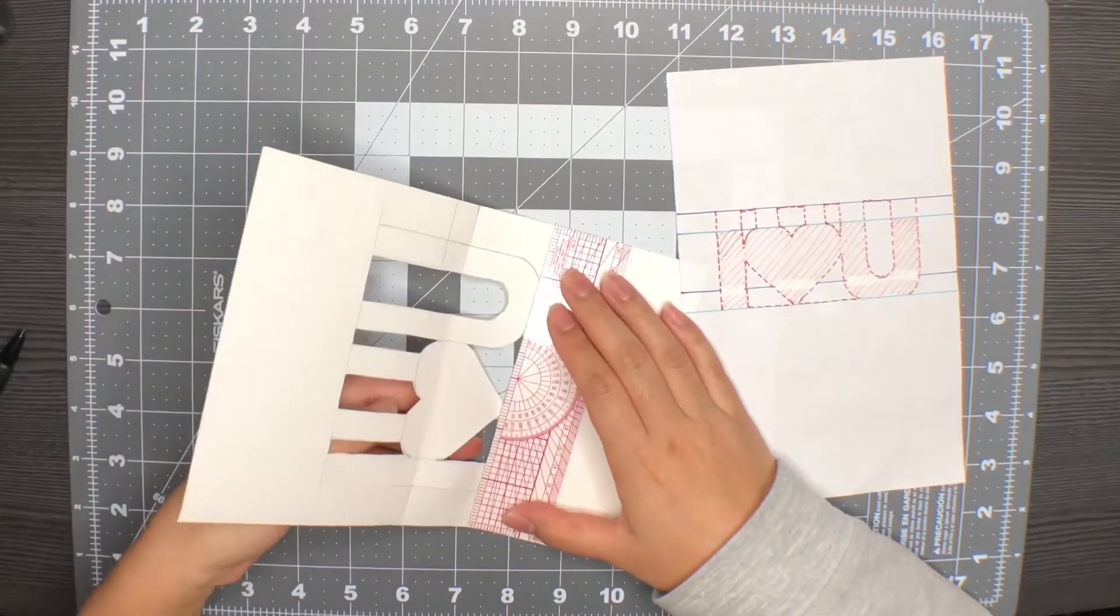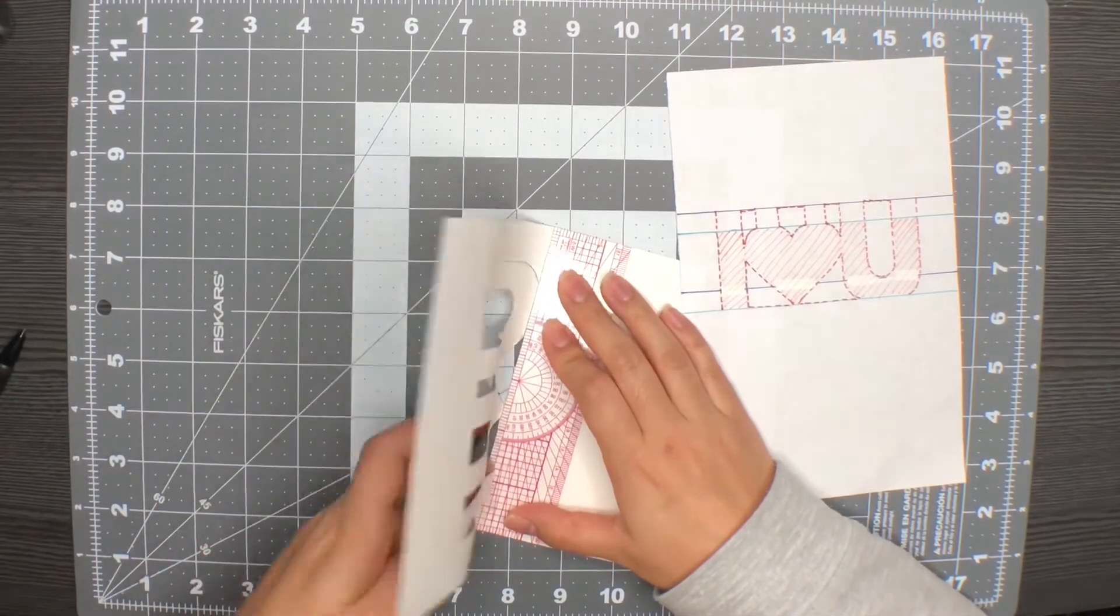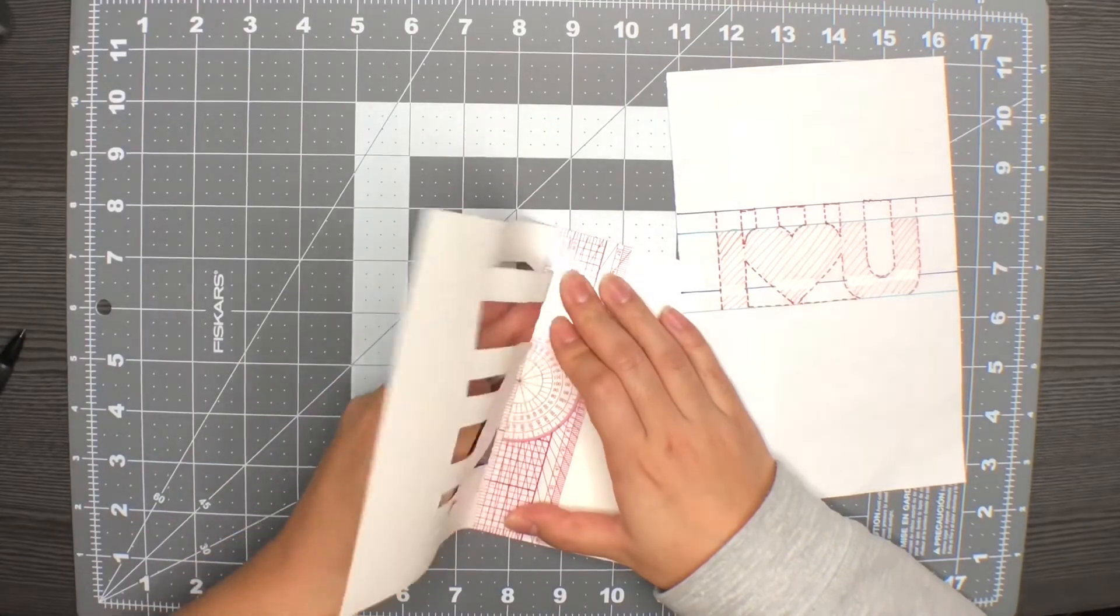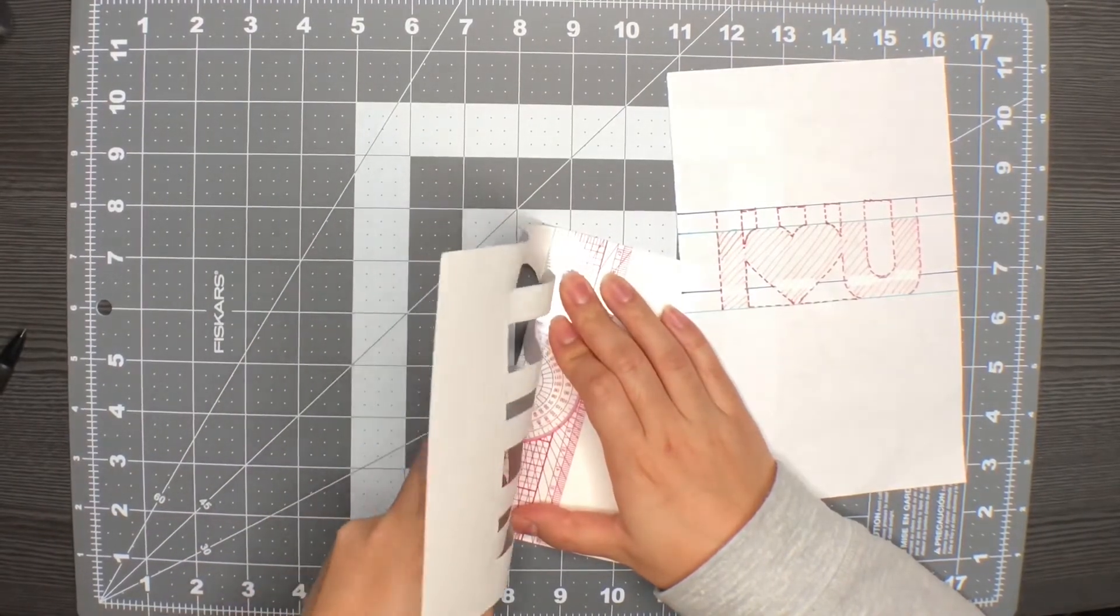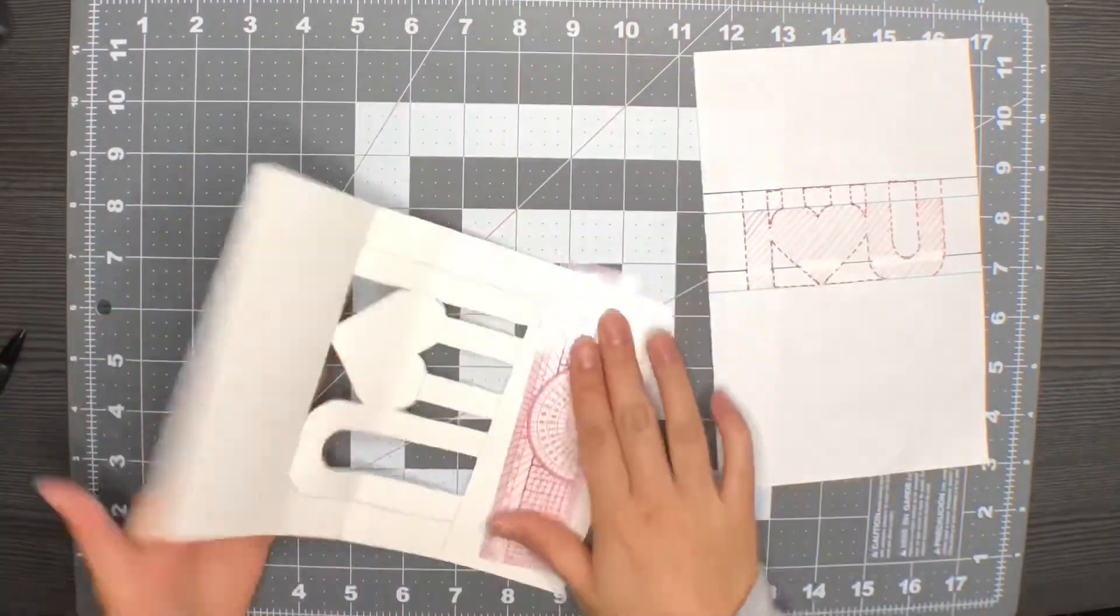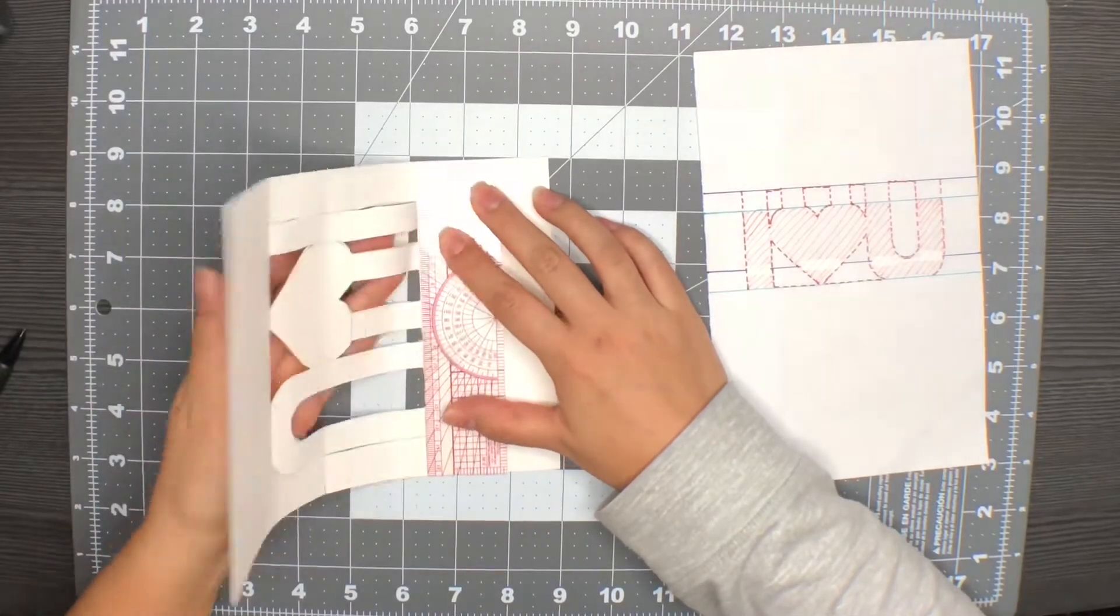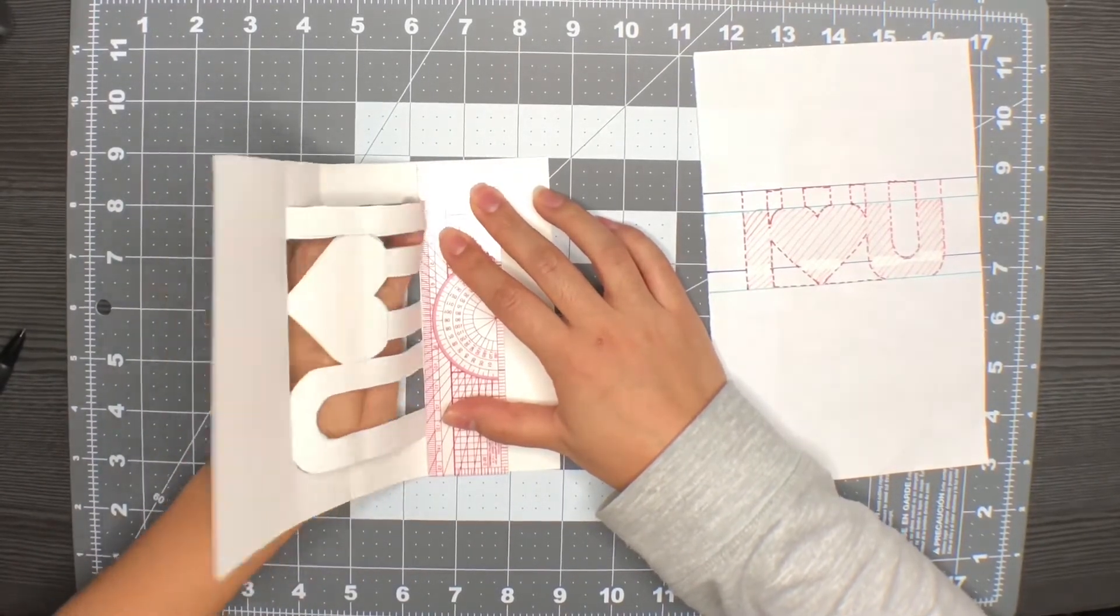Just like the simple pop-up card, we will invert that middle section. The first crease will be on the bottom line. Again, we will use our ruler to create that crease. And now we will create a crease on the top line.